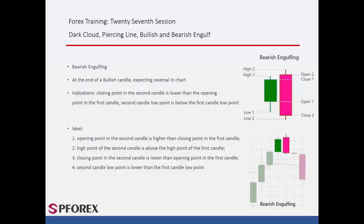Bearish Engulfing Candle is an important candle that forms at the reversal point of an uptrend. It consists of two candles, in which the close price of the second candle is lower than the open price of the first candle, and the low of the second candle must be lower than the low of the first candle. The ideal conditions for a bearish engulfing are: 1) open price of the second candle is higher than the close price of the first candle; 2) high price of the second candle is above the high of the first candle; 3) close price of the second candle is below the open price of the first candle; 4) low price of the second candle is lower than the low of the first candle. The second candle covers all price points of the first candle, hence why it is called engulfing.